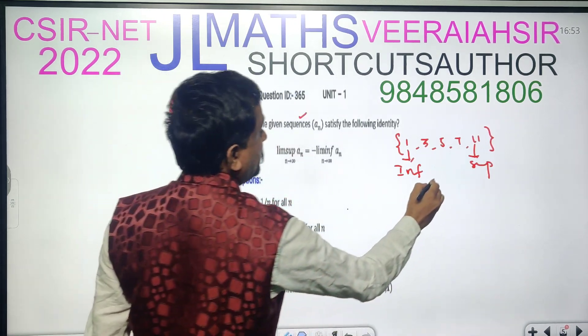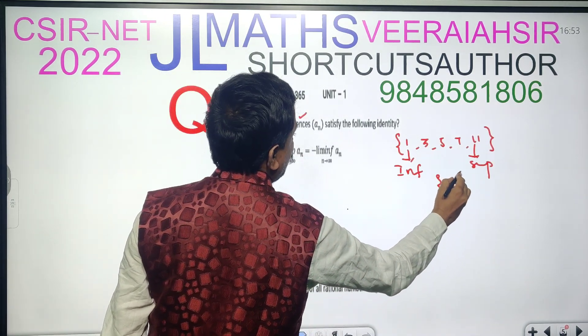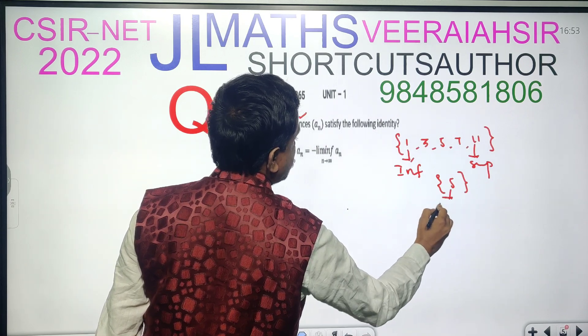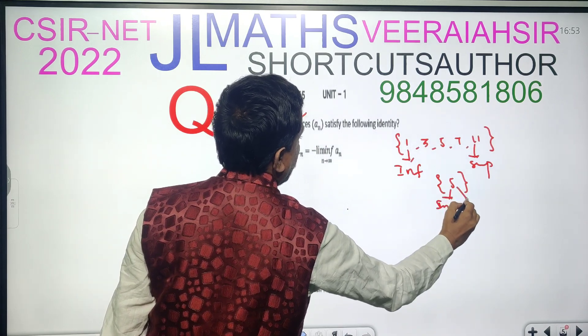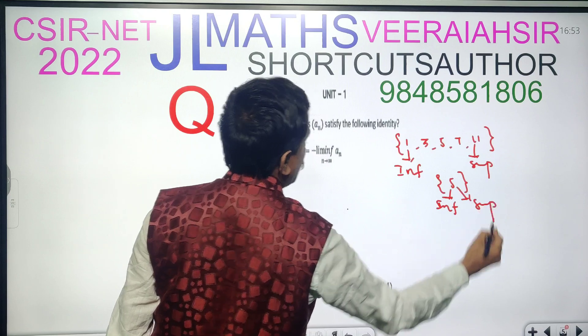For example, the singleton set 5, here infimum is 5 and Supremum is also 5.